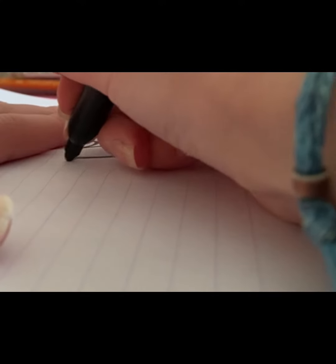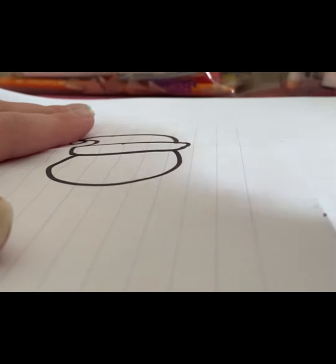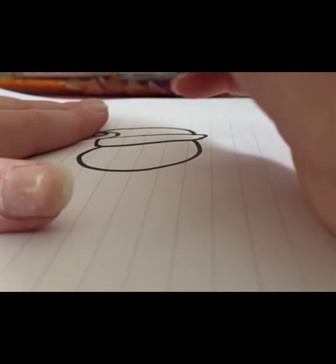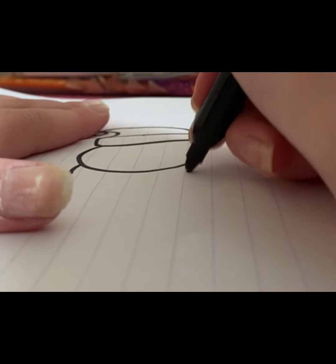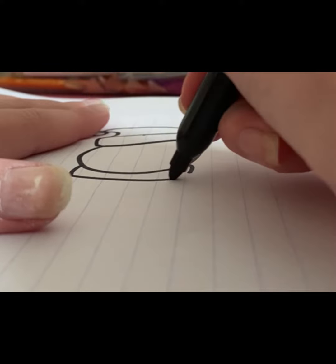Next, we are going to draw a circle. And then do two curved lines at the end there. Join them up.